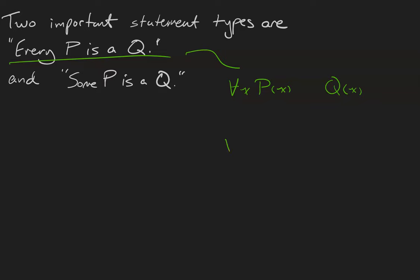A naive answer is to use the conjunction for all x, P(x) is true and Q(x) is true. But let's think of what this is saying. This is saying everything in our domain, so I'll just write everything, is a p and a q.